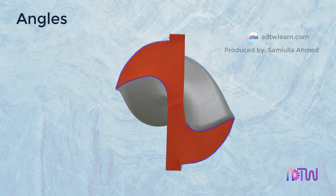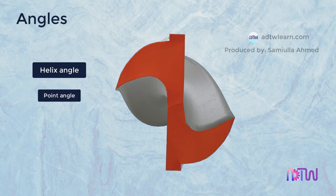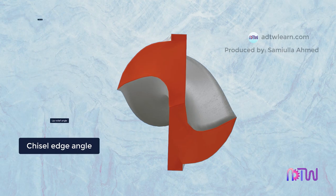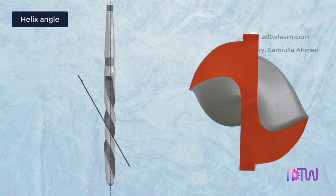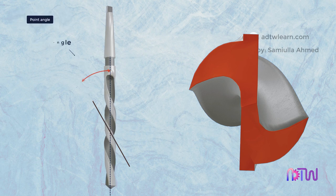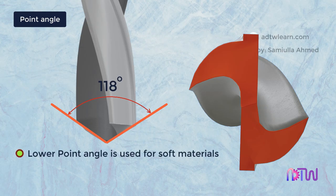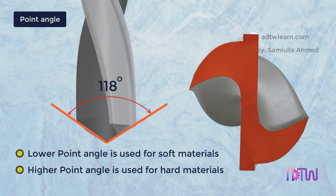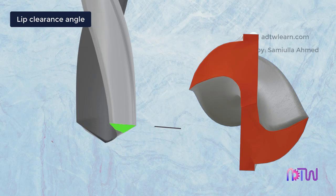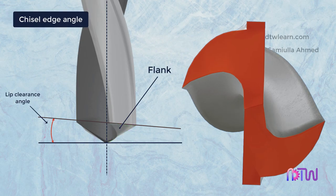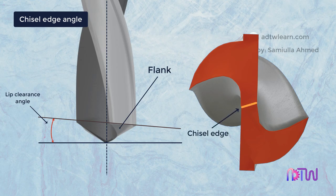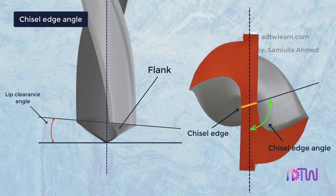Apart from this, there are various angles formed in the twist drill: helix angle, point angle, lip relief angle, and chisel edge angle. Helix angle: the angle formed by the leading edge of the drill and the drill axis is known as the helix angle, also called the spiral angle. Point angle: the angle between both cutting edges, generally 118 degrees — lower point angle for soft materials, higher for hard materials. Lip clearance angle: the angle between the flank and the line normal to the drill axis. Chisel edge angle: the angle between the chisel edge and the lip or normal to the drill axis, generally between 125 to 135 degrees.